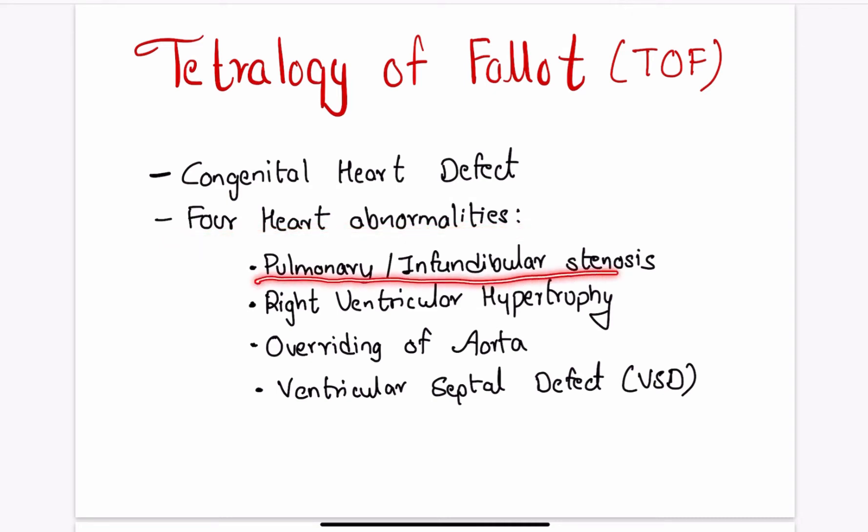Pulmonary stenosis or infundibular stenosis, right ventricular hypertrophy, overriding of aorta, and ventricular septal defect. You can remember these as PROOF. We will discuss about these later in the video.